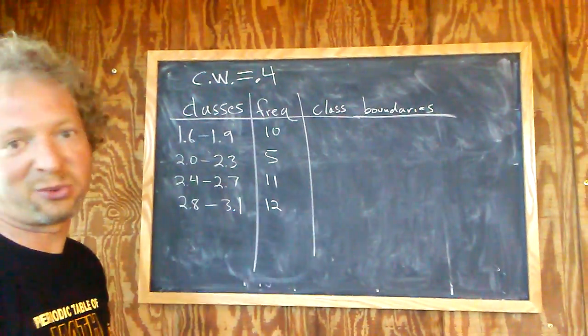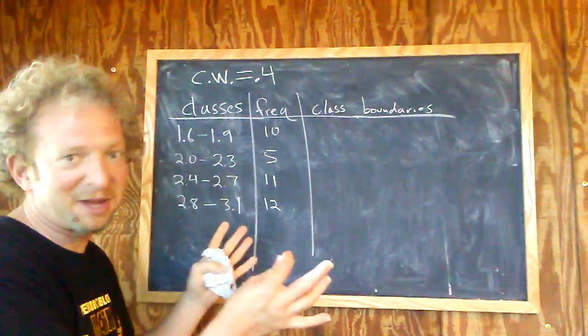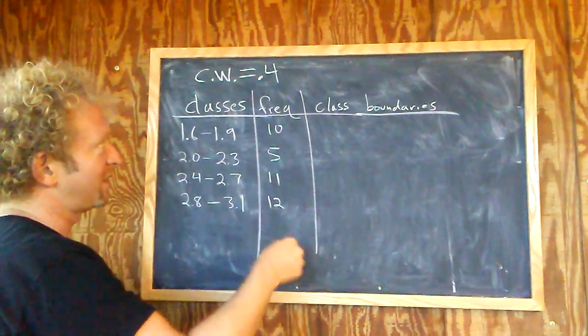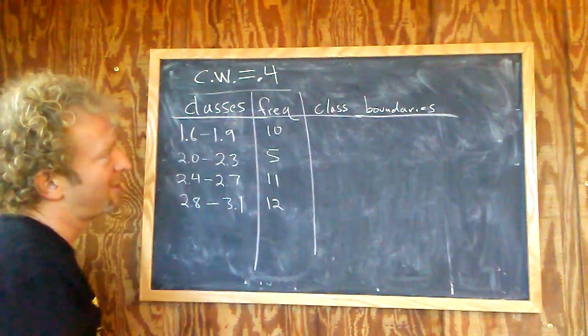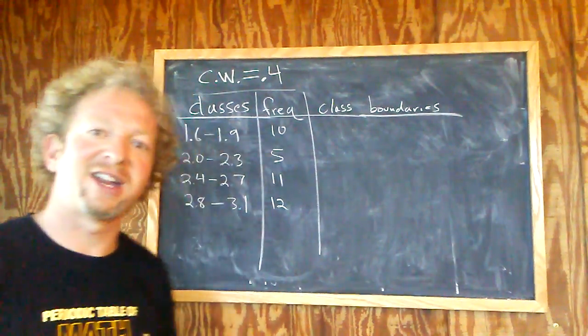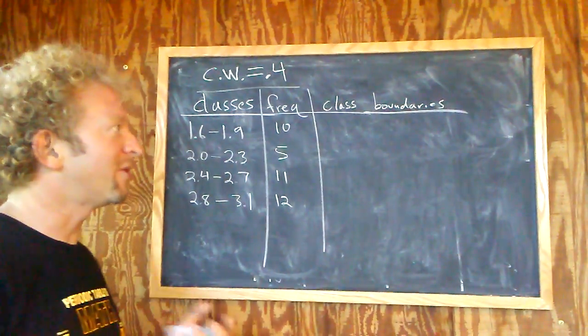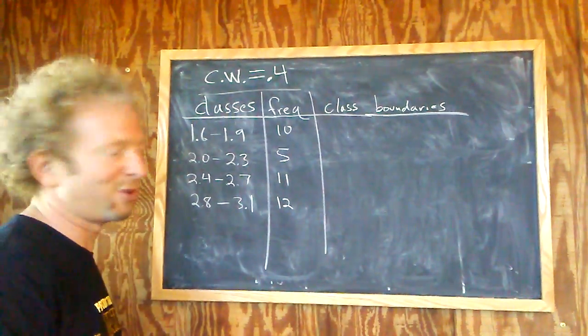We're going to find the class boundaries. So we're given a frequency table. I just made it up. We have some made-up frequencies and we have a made-up class width. And so we're doing the hardest part, which is actually finding the class boundaries. So I don't know how other people do it. Here's how I do it, and this always works.